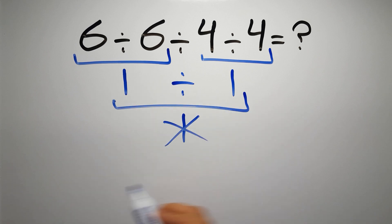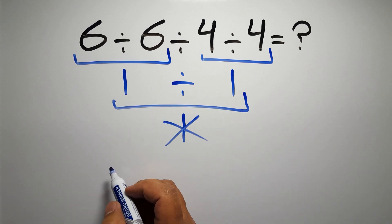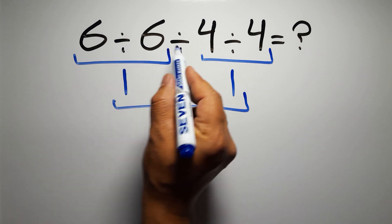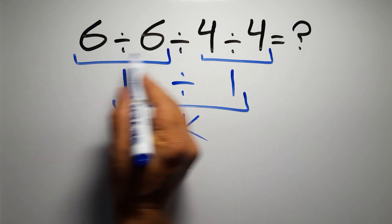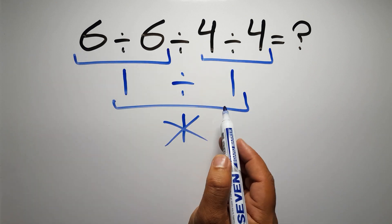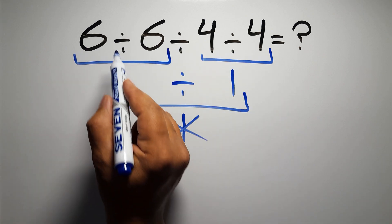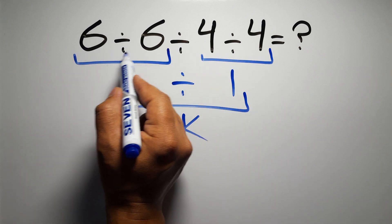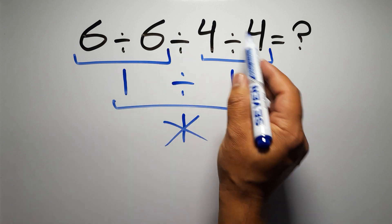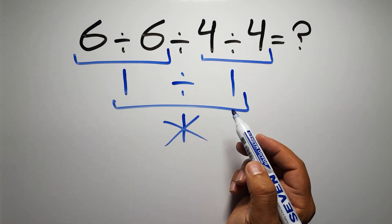But this answer is not correct, because according to the order of operations, when we have more than one division in an expression, we have to work from left to right. So here, first we have to do this division, then this division, and finally this division.